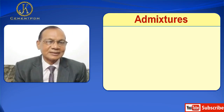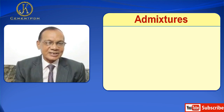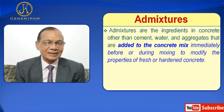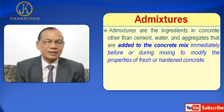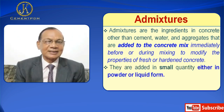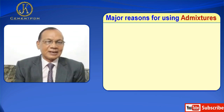Okay. I will discuss about admixtures. Admixtures are the ingredients in concrete other than cement, water, and aggregates that are added to the concrete mix immediately before or during mixing to modify the properties of concrete. They are added in small quantities, either in powder or liquid form.